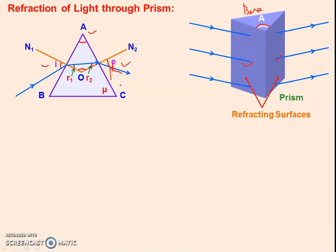Now see the deviation — this is the angle δ. In the absence of the prism, the direction of the incident ray continues along a dotted line. But due to the prism, it suffers double refraction and emerges out in a different direction. The angle between the incident ray and the refracted ray through the prism is the angle of deviation. Now we have to calculate all these things.